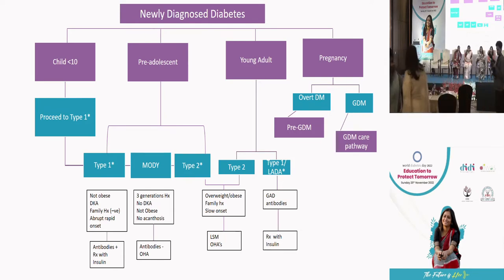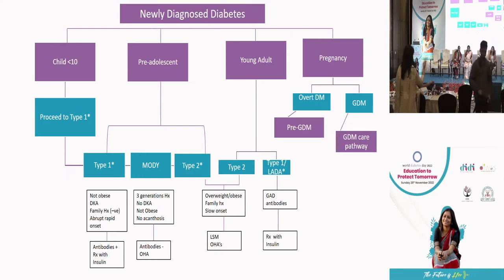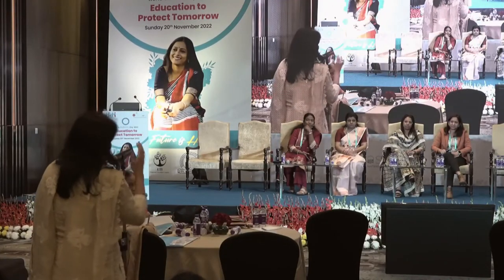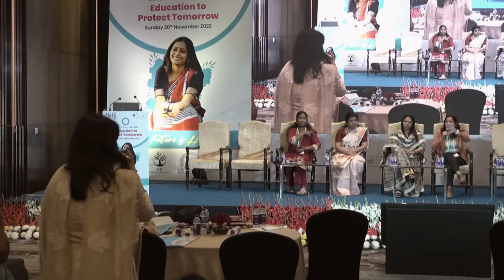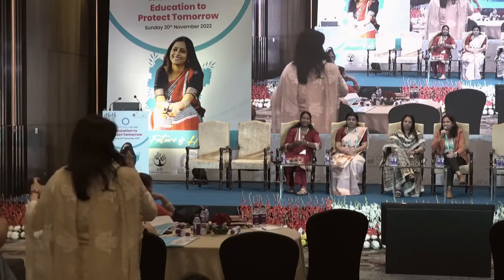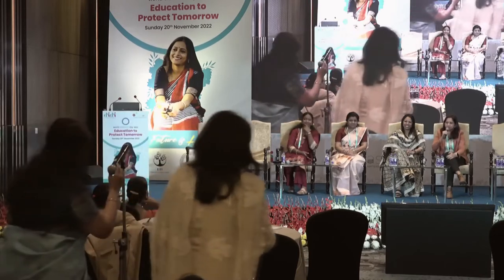In centers like Delhi, the IADPSG approach with fasting OGTT may be practical, whereas the DPSI guideline — fasting or non-fasting 75 grams, 2-hour value, cut-off of 140 — is more suitable for rural and semi-urban settings. Both an individualized approach and a national-level approach exist. Without a standardized national approach, we have no real idea of incidence or how patients are responding. OBGYNs, endocrinologists, and pediatricians need to come together.